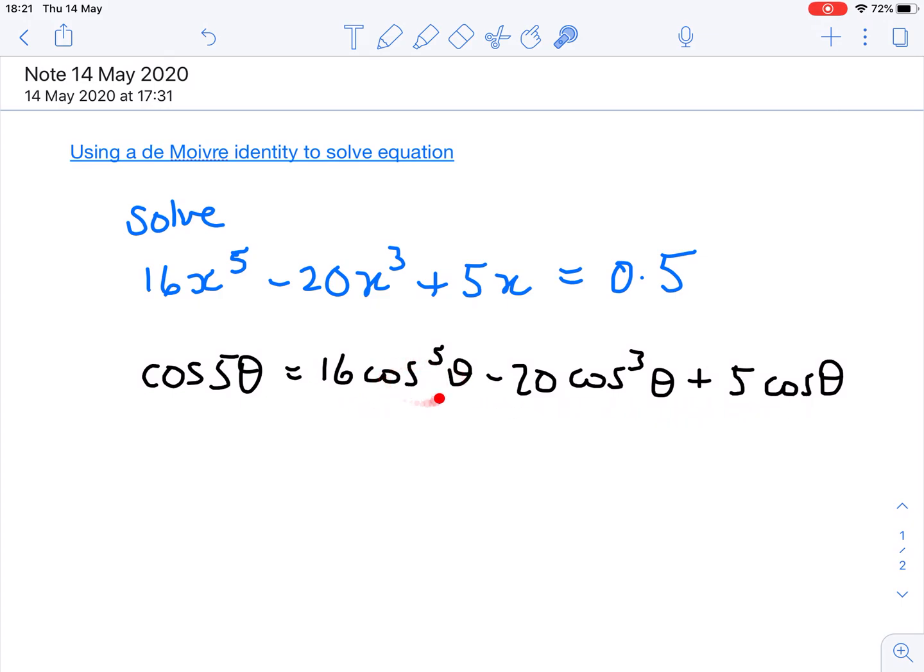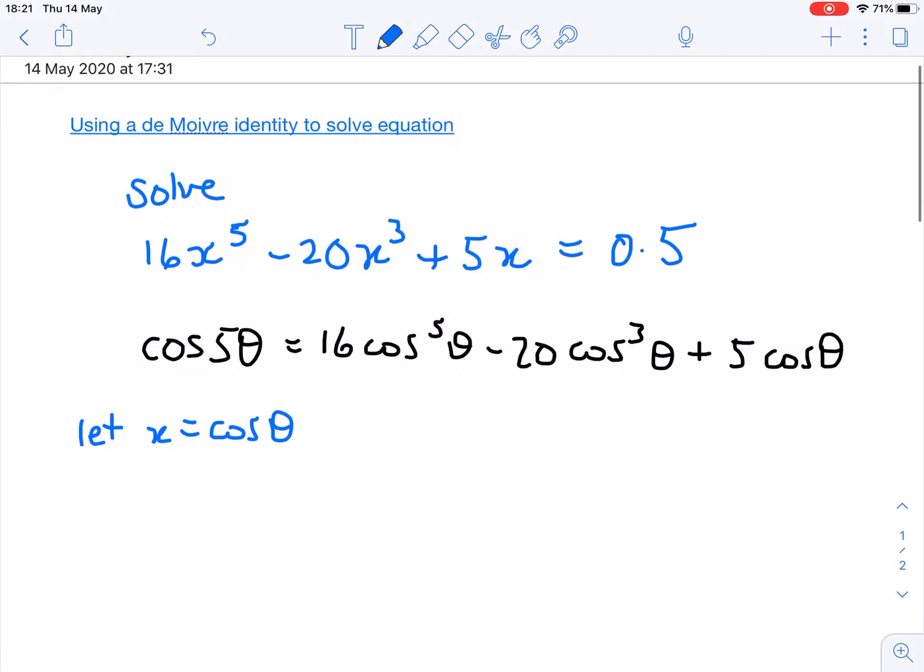Now the variable's not the same. In the identity the variable is cos(θ) and here the variable is x. But if I just take the step of saying let x be cos(θ), the variable for which I'm trying to solve is x. My solutions will be of the form x equals some number or other. But we're going to get to it using the trig identity.